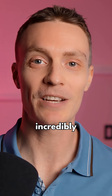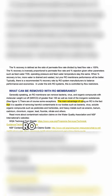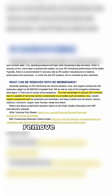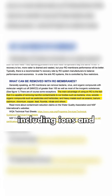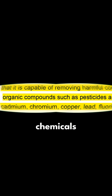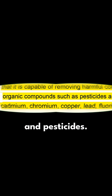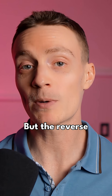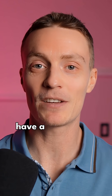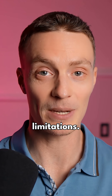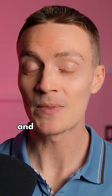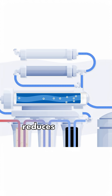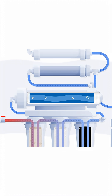RO water is incredibly versatile. RO systems can remove various inorganic compounds including ions and metals, as well as organic chemicals and pesticides. But the reverse osmosis process does have a few specific limitations — most importantly, it creates waste water and also greatly reduces mineral concentrations in the purified water.